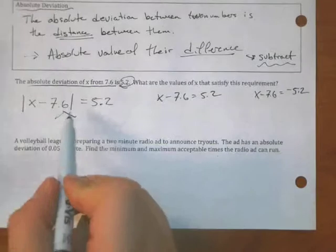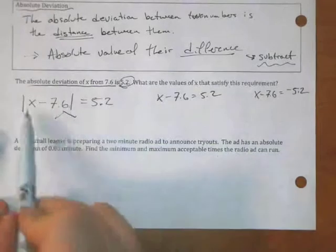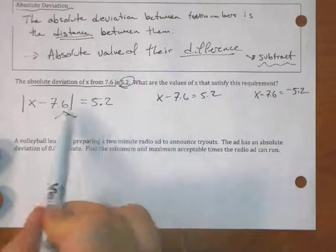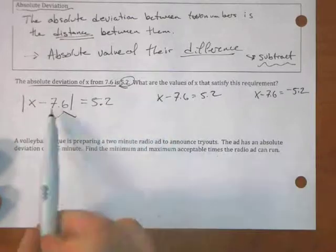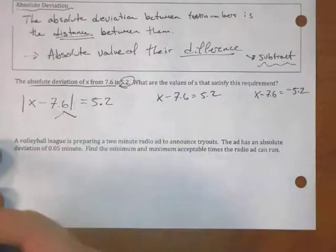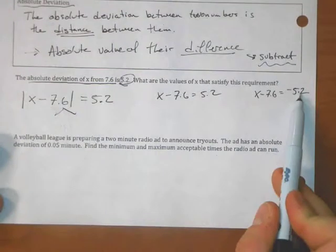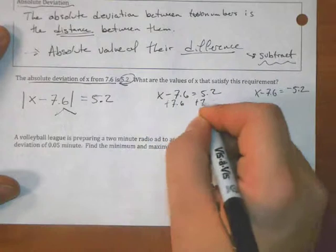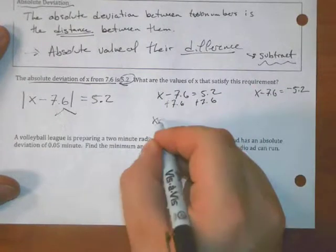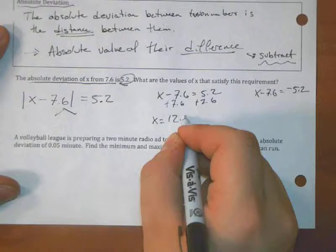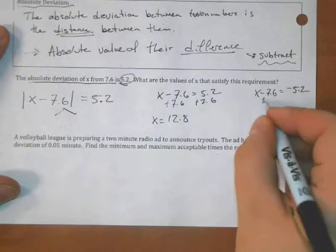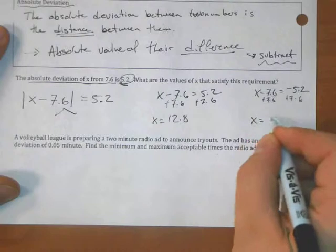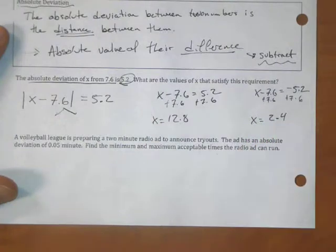We're solving an absolute value equation here, right? So we'll take what's inside equals positive 5.2. That's walking to the right. Or maybe what we did inside walked to the left instead, so we'll go to negative 5.2. Solve each of these. And we get x is equal to 12.8, or adding 7.6, we get x is equal to 2.4.